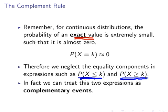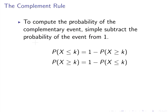So how do we compute the probability of the complementary event? Simply subtract the probability of the event from 1. So probability of X less than or equal to k is equal to 1 minus the probability of X greater than or equal to k. They're actually directly equivalent to each other. You just have to rework one of them to find the other.